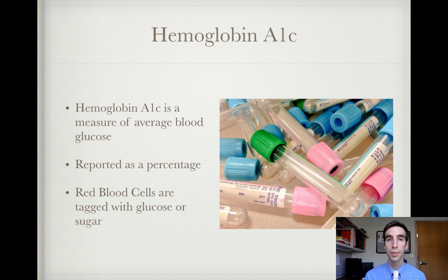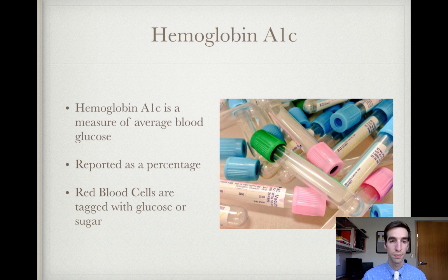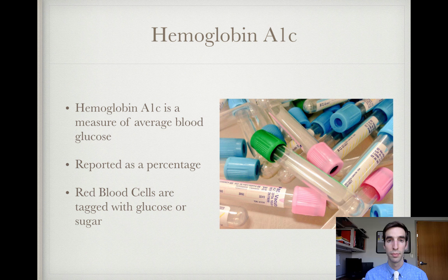To start out, hemoglobin A1c is a percentage. In the medical field, we use this to measure a patient's blood sugar control over the last 90 days. Red blood cells are tagged with glucose, and we measure these red blood cells to see how much glucose is attached to them — this gives us the hemoglobin A1c level.